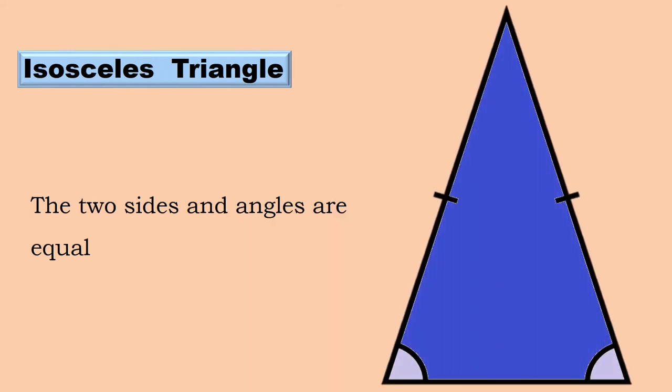Isosceles Triangle. This triangle has two equal sides. Both sides have the same length and angle.